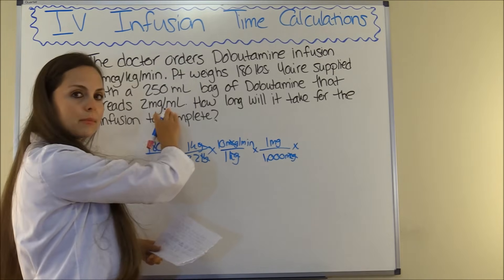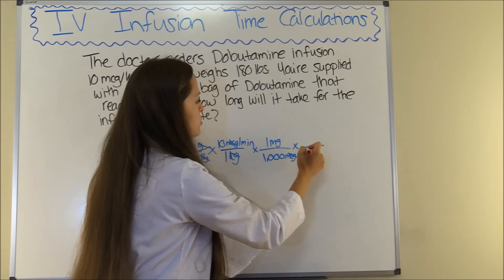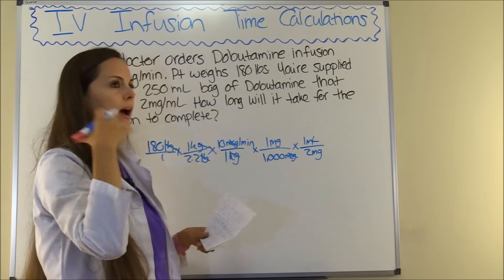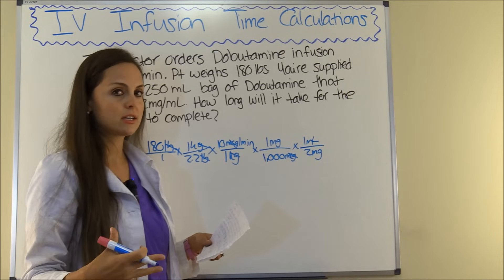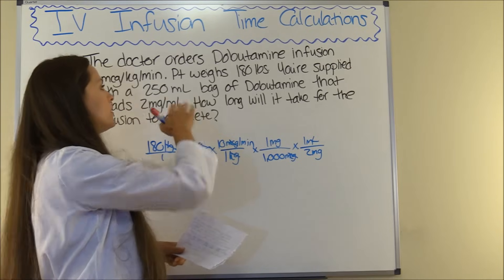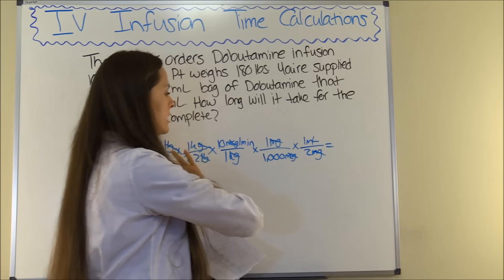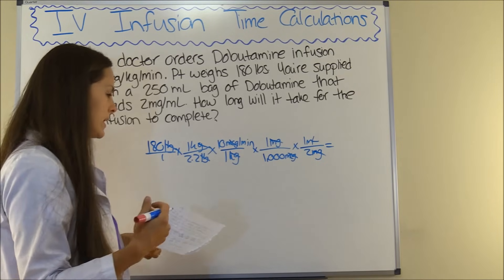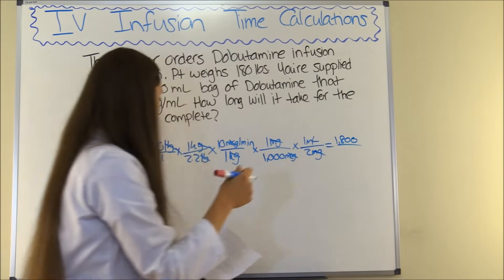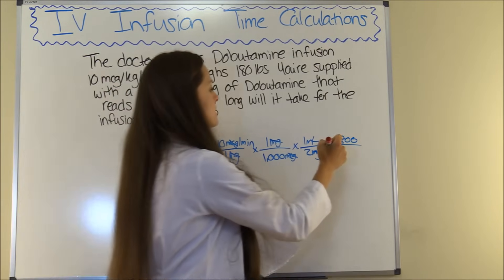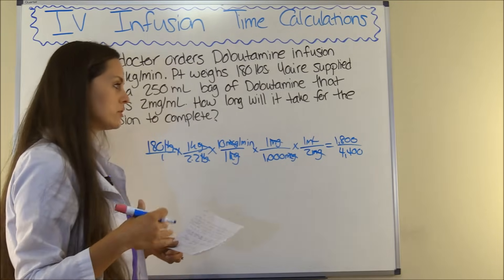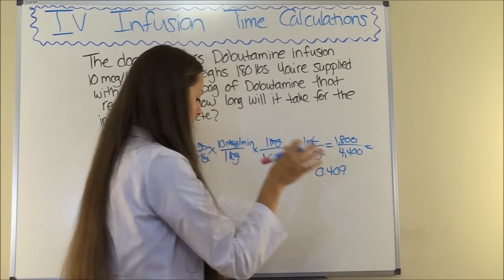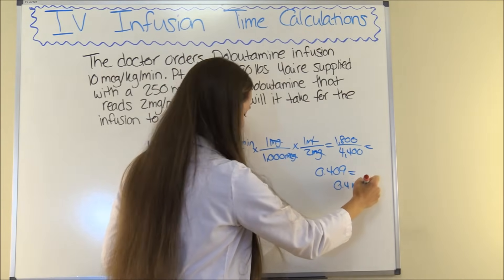Now we plug in what we have on hand: 2 milligrams equals 1 milliliter. Milligrams cancels out and we're ready to solve. Multiply everything at the top: 180 times 1 times 10 times 1 times 1 is 1,800. And 1 times 2.2 times 1 times 1,000 times 2 is 4,400. And 1,800 divided by 4,400 equals 0.409 repeating, which we round to 0.4 milliliters per minute.